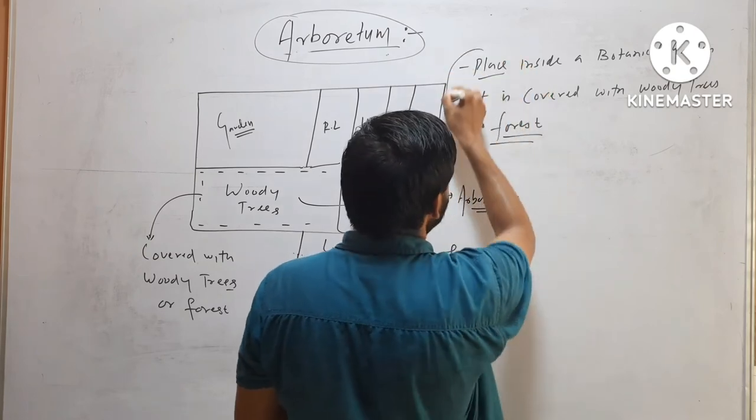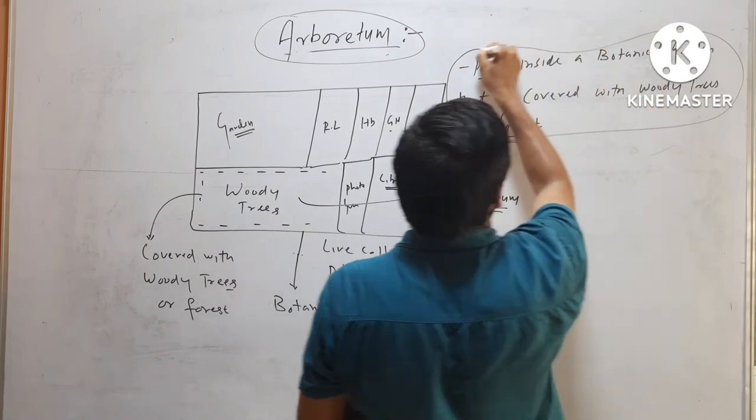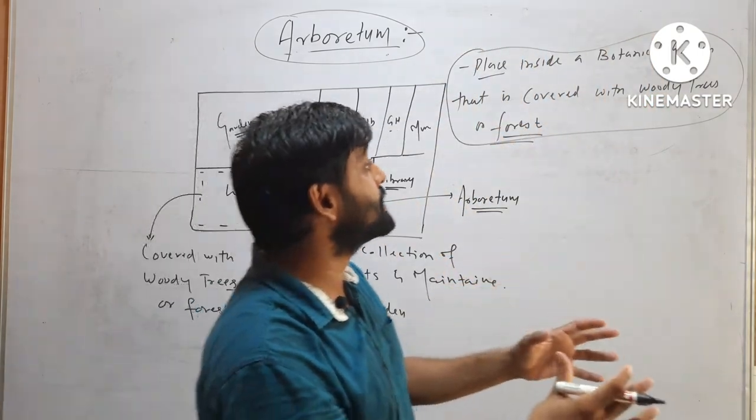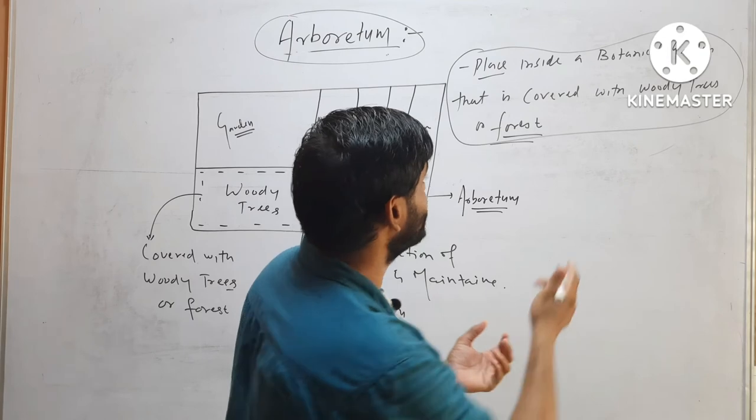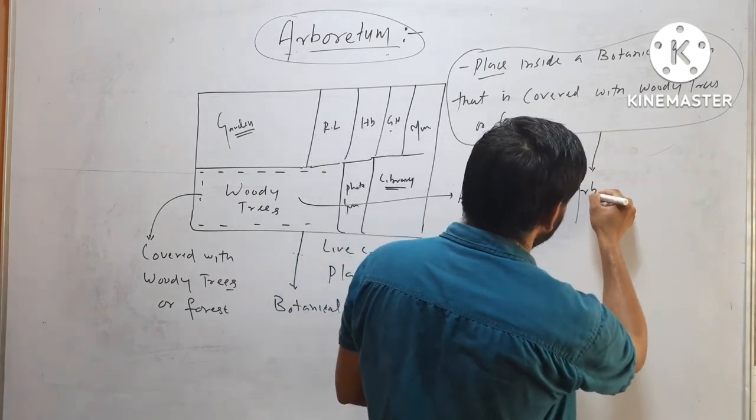This area, a place inside a botanical garden where large trees, woody trees or forest is present is called Arboretum.